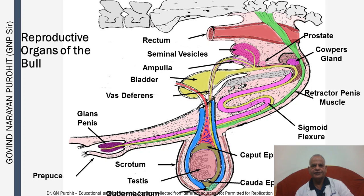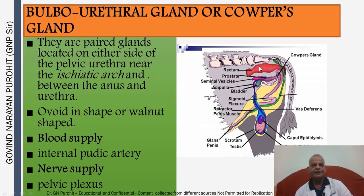This picture shows the location of the accessory sex glands of the bull — you can see the Cowper's Glands, the prostate, and the seminal vesicles. The Bulbourethral Glands or Cowper's Glands are paired, located on either side of the pelvic urethra near the ischiatic arch and between the anus and urethra. They are ovoid or walnut-shaped. The blood supply to the Bulbourethral Glands is the internal pudic artery and the nerve supply is from the pelvic plexus.